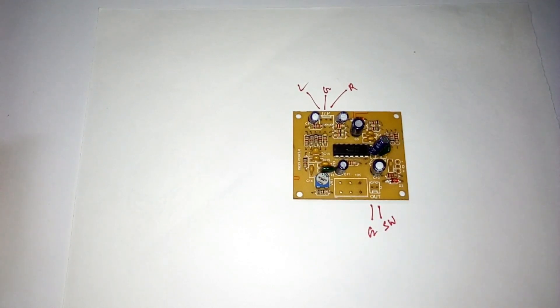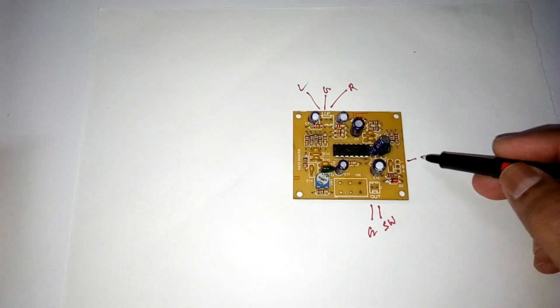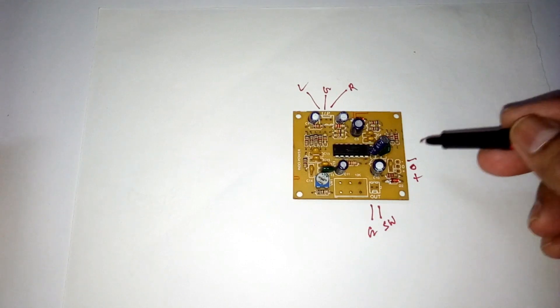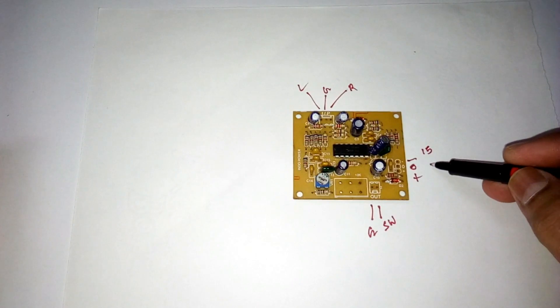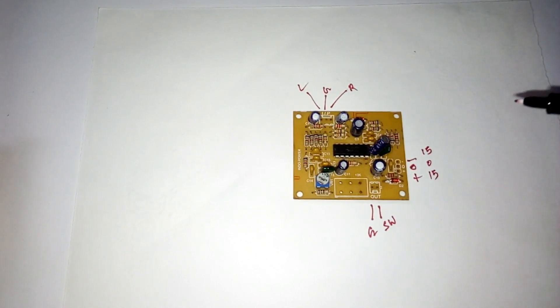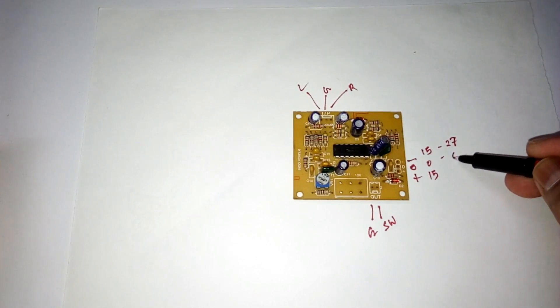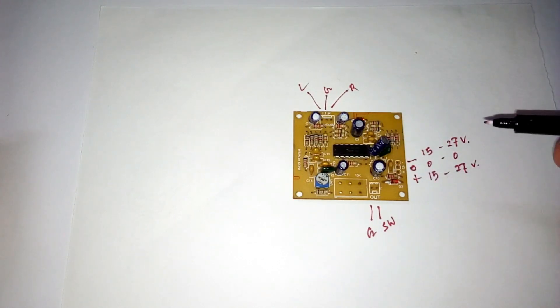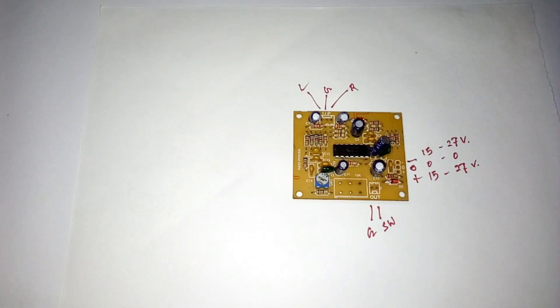And here is the power supply. This is the negative and zero, it's the positive. And here in this kit you can use a power supply of 15-15-0-15 to 27-0-27 volt. So it's a wide range of voltage you can use in this kit.